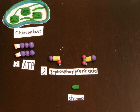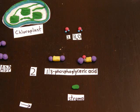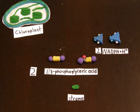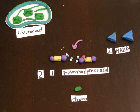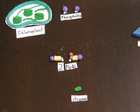Two molecules of ATP turn it into two molecules of 1-phosphoglyceric acid, releasing two water molecules. Two molecules of NADPH plus H positive provide energy to split off the phosphate, turning it into PGAL molecules.